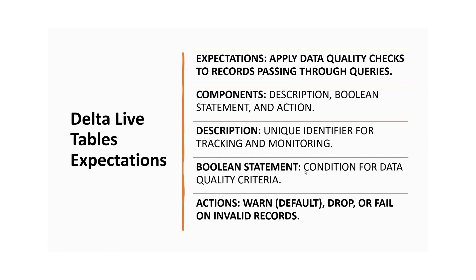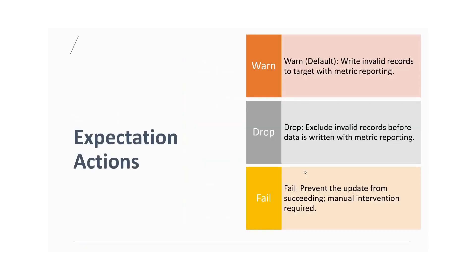The description is a unique identifier for tracking and monitoring. The boolean statement evaluates the condition — if the condition is true, the statement returns true; otherwise it returns false. There are three actions available based on the condition. You can warn, drop, or fail on invalid records. We will talk about the actions in more detail in the next section.